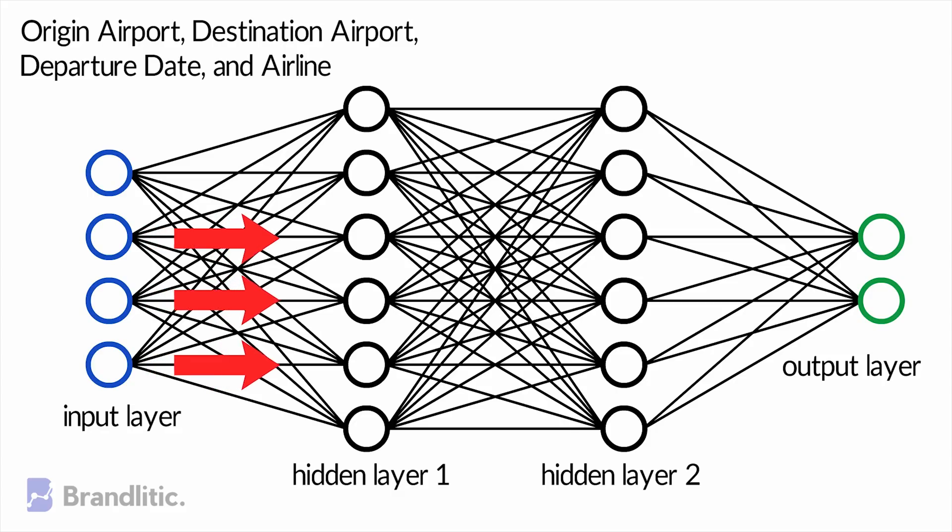The input layer passes the inputs to the first hidden layer in the network. The hidden layer is the one which performs mathematical computation on the inputs. One of the challenges in creating neural networks is deciding the number of hidden layers and also the number of neurons for each layer. We should remember that the term deep in deep learning refers to having more than one hidden layer in it.